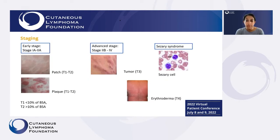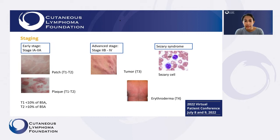For patients who have early stage disease, they may have flat patches that can be hyperpigmented in Caucasian patients or hypopigmented in African-American patients or patients of color. These patches can also become thicker and show up as plaques. In more advanced stages, we'll see raised tumors, generalized erythroderma, or redness of the skin. If the lymphoma is involving the blood in what we call Sézary syndrome, the pathologist will see these Sézary cells under the microscope.